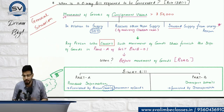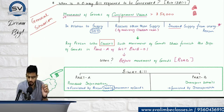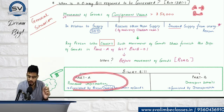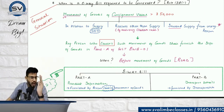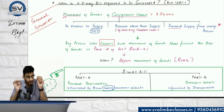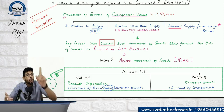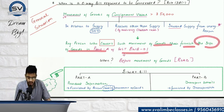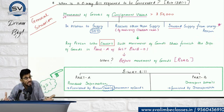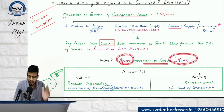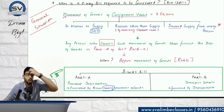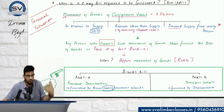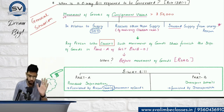E-way bill has two parts: Part A and Part B. Part A contains basic product details; Part B contains vehicle details. Part B is relevant when transport is by road. Until Part B is generated, the e-way bill is not complete. A registered person who causes the movement of goods shall furnish information in Part A. For road transport, e-way bill must be generated before commencement of movement. For vessel, air, or railway, you can generate it after commencement but must show it at the time of delivery.